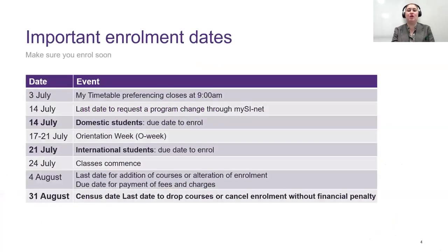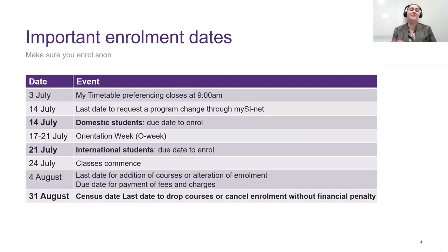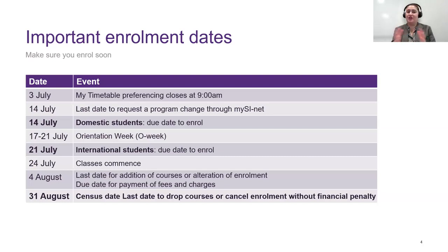Starting with important enrollment dates — some of you might already be enrolled in your courses and are mainly here for timetabling, or some of you might not know where to start. Timetabling will open next Monday the 19th, and you have until the 3rd of July to put in your preferences on My Timetable. On the 14th of July, that is the last date to make a program change in mySInet, and it's also the due date for domestic students to enrol. Please make sure all your courses are enrolled in and you've done your timetable.